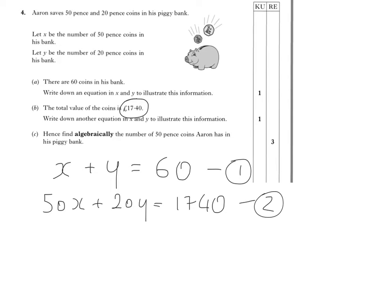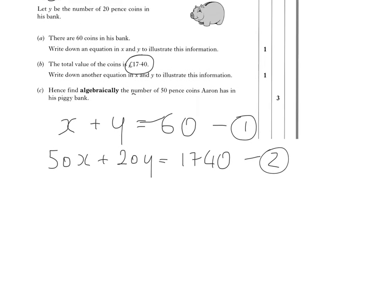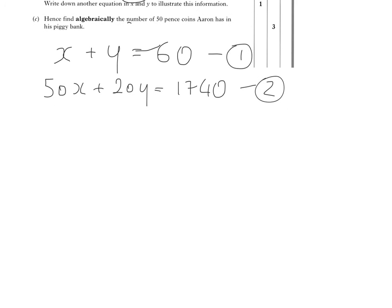Part C says: Hence find algebraically the number of 50p coins Aaron has in his piggy bank. Right, so number of 50p coins, and that means that I'm concentrating on finding the value for x. So I'm going to look at finding the value of x. So I'm going to get rid of y's here.